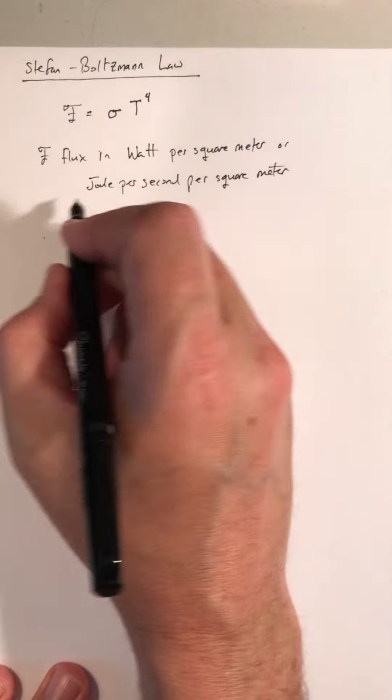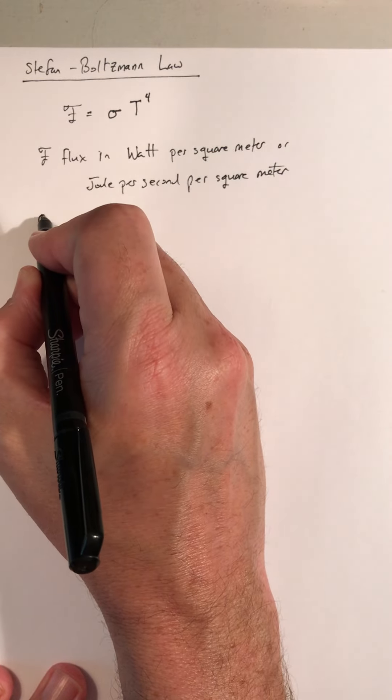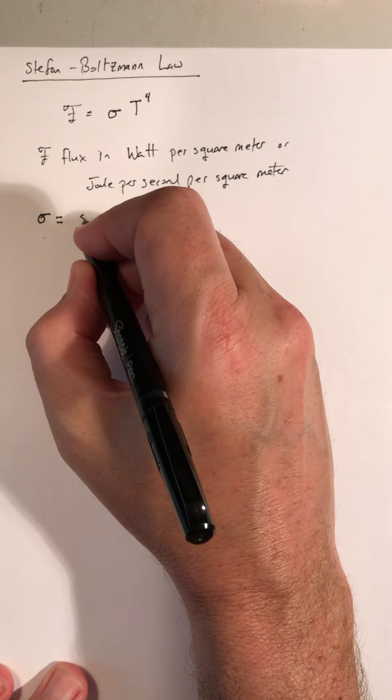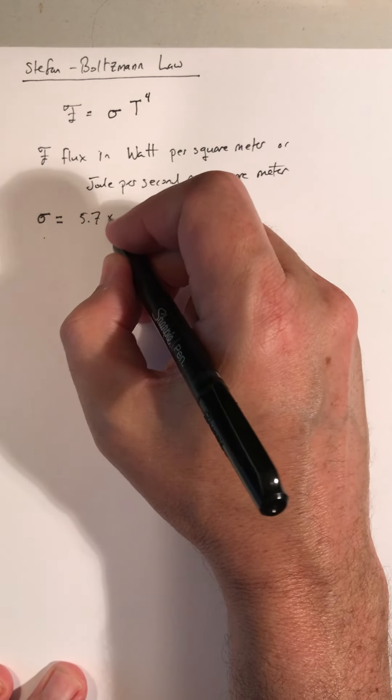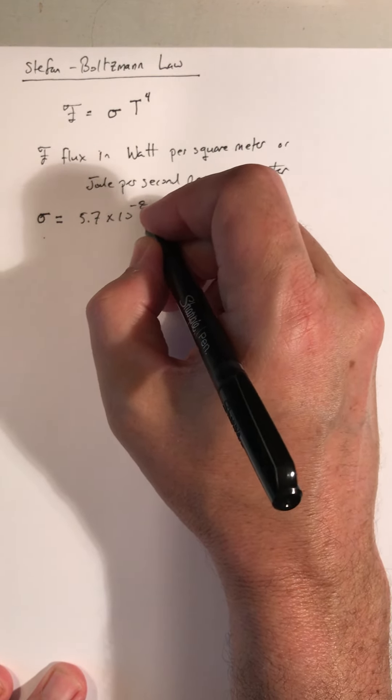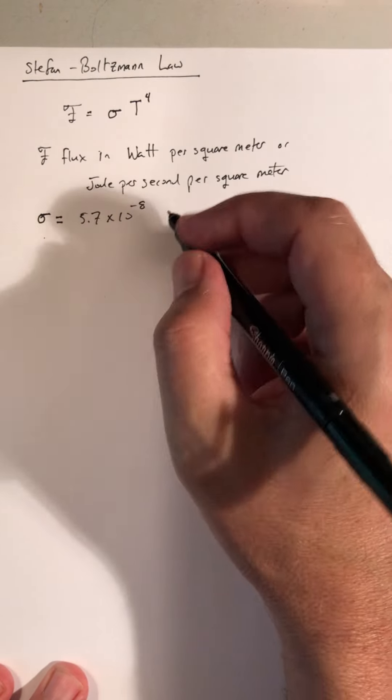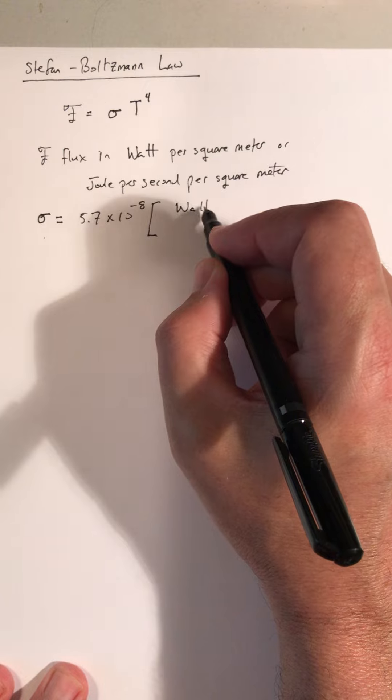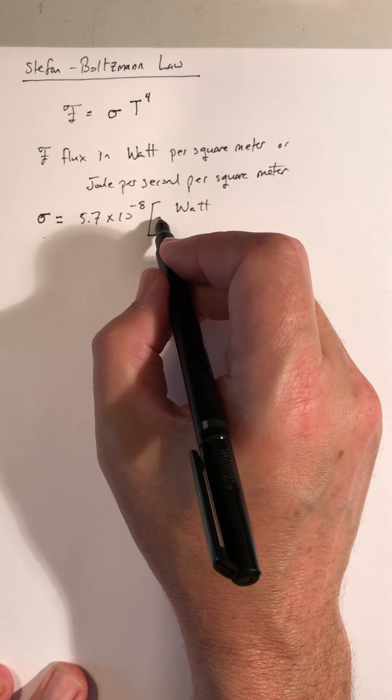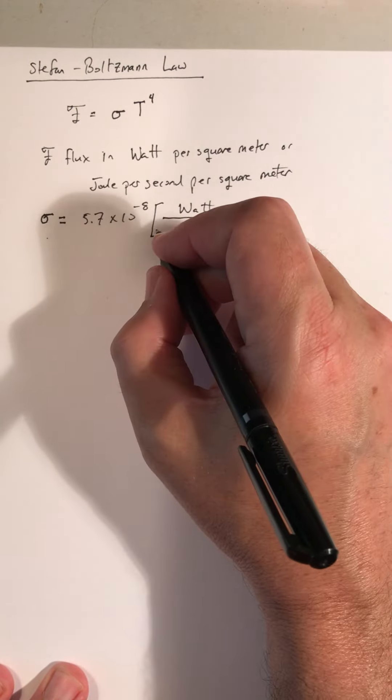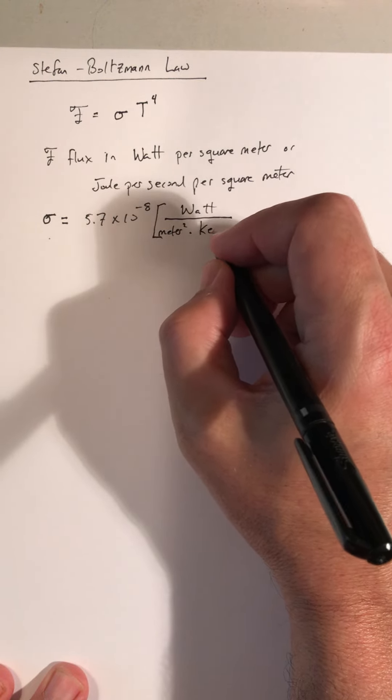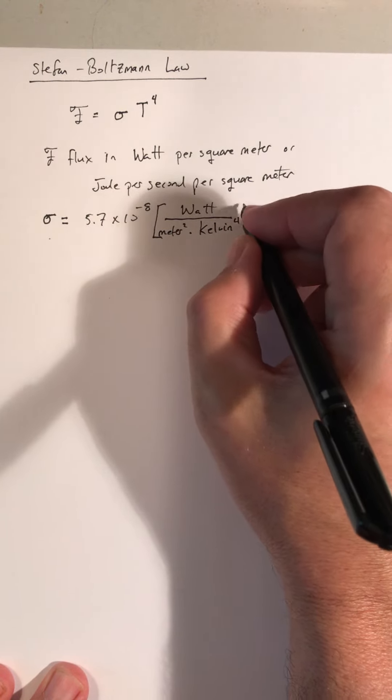And our constant sigma, the lowercase sigma, is 5.7 times 10 to the minus 8. So this has some units to get a little wonky. It is in watts per meter squared and per Kelvin to the fourth power.